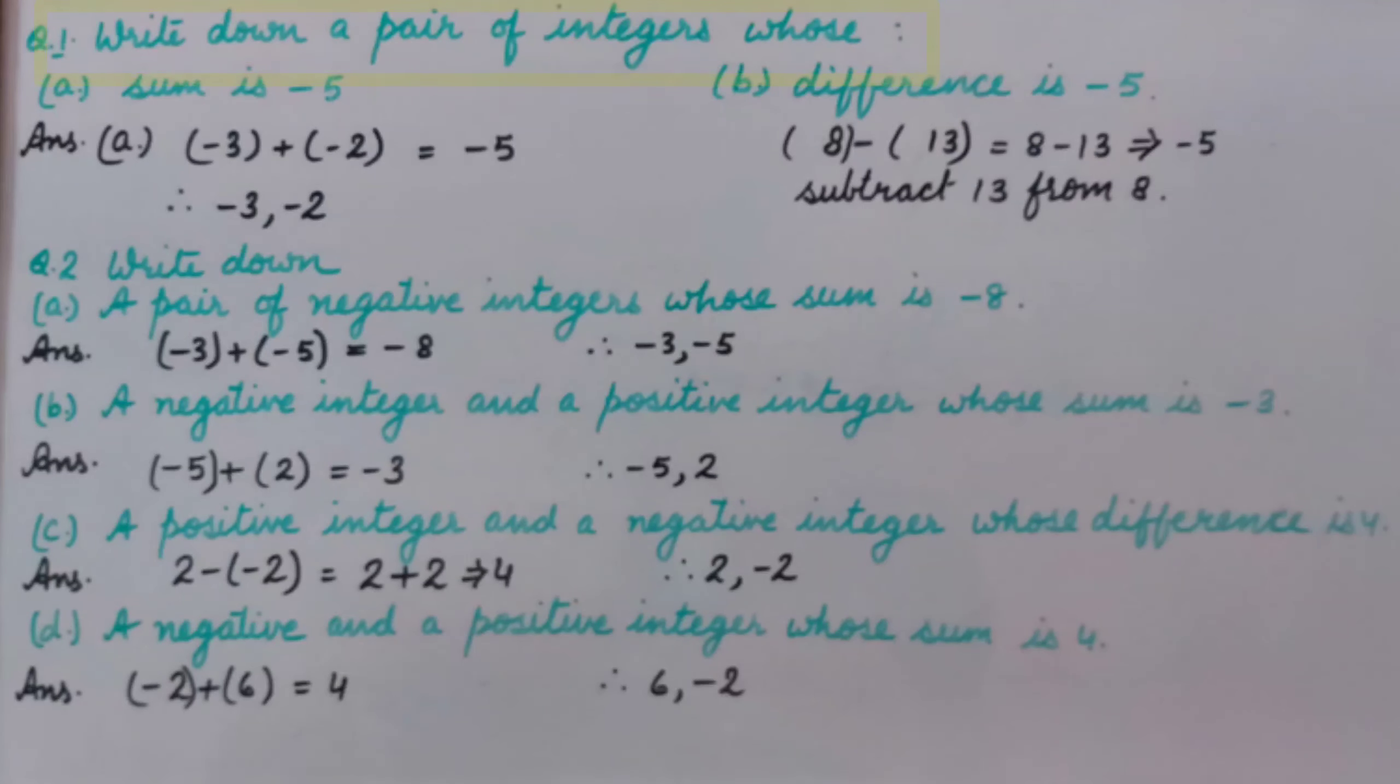Write down a pair of integers whose sum is minus 5. In this case, we have to take two integers whose sum should be minus 5.